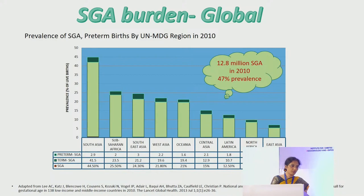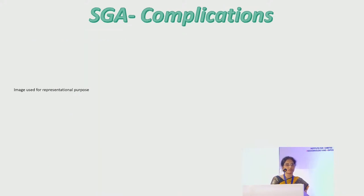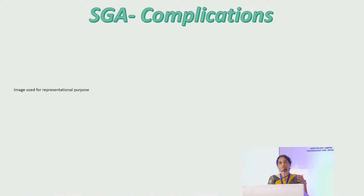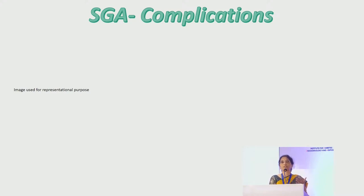There were 12.8 million small for gestational age infants in 2010, with a 47% prevalence — a very high number. Unfortunately, we are overlooking these infants. Most follow-up after delivery consists of correcting hypoglycemia, hypothermia, and hyperbilirubinemia in the first two to three days, but then they are followed up as routine children. This should not be the case because they have many complications.